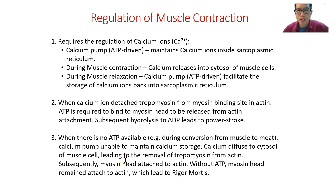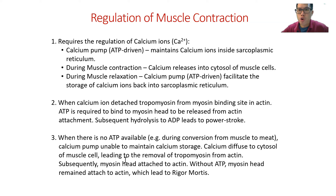Rigor mortis does not last forever. After a certain period, the muscle starts to relax due to the breakdown of muscle fibers, either by external enzymes such as from bacteria, or by internal enzymes that hydrolyze the meat. Rigor mortis occurs after ATP is exhausted following slaughter, and resolves once the muscle fibers are broken down by these enzymes.